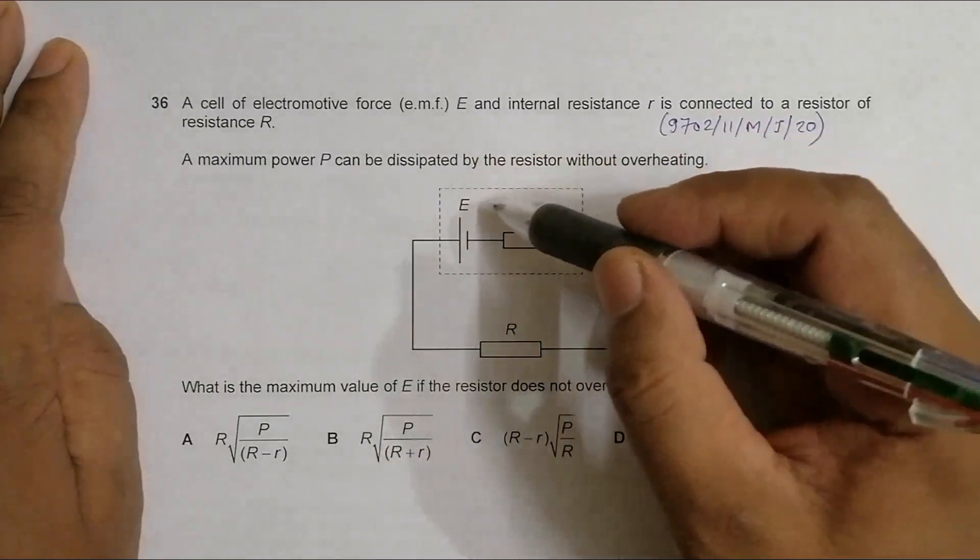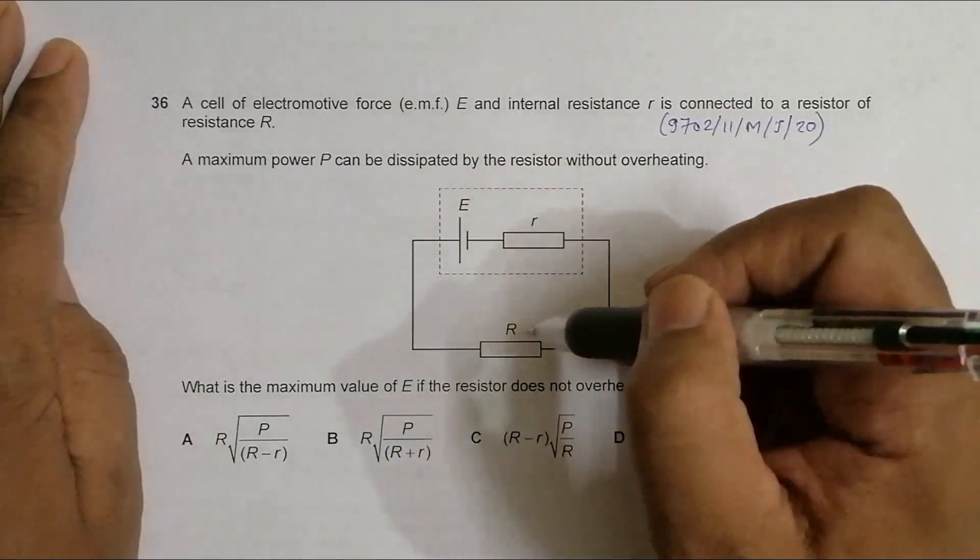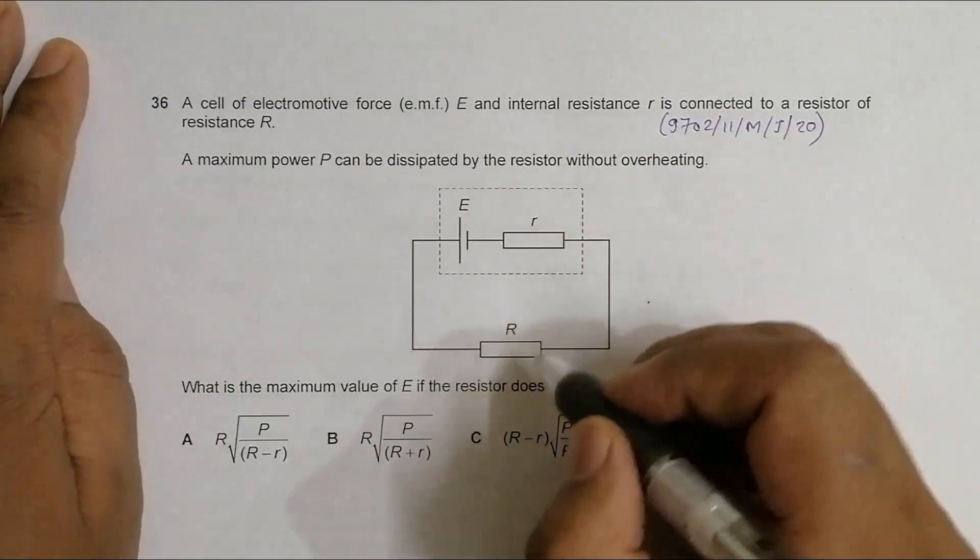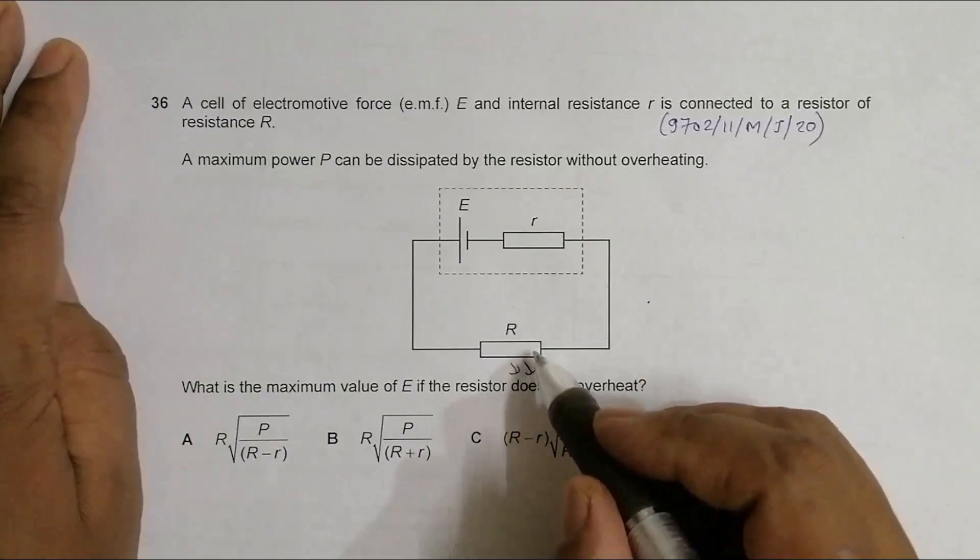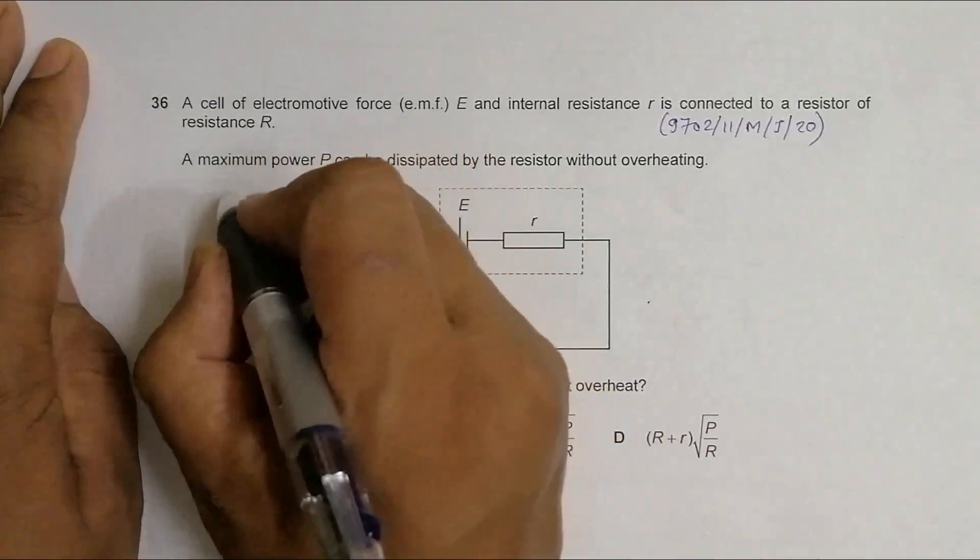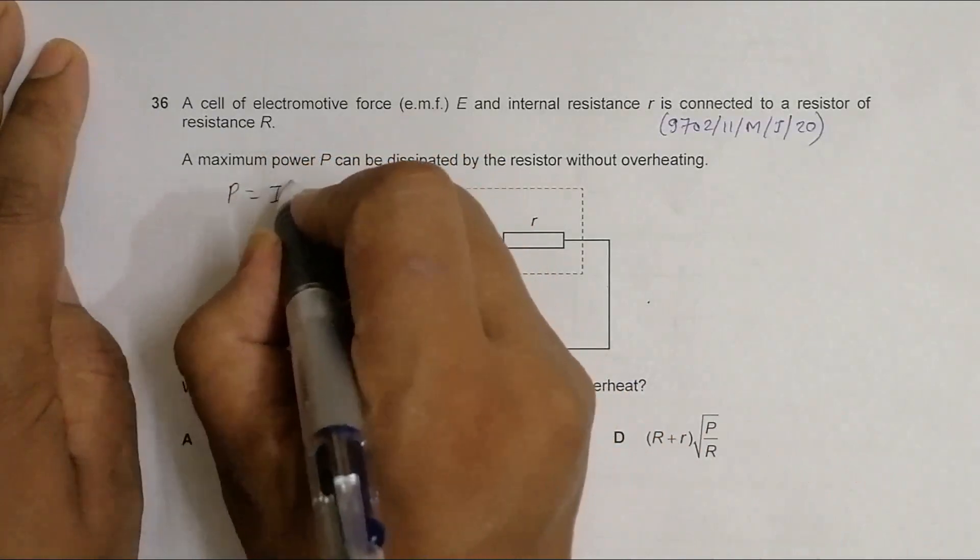Power dissipated from any resistor R is power equals I squared into R. We need to find this current I.